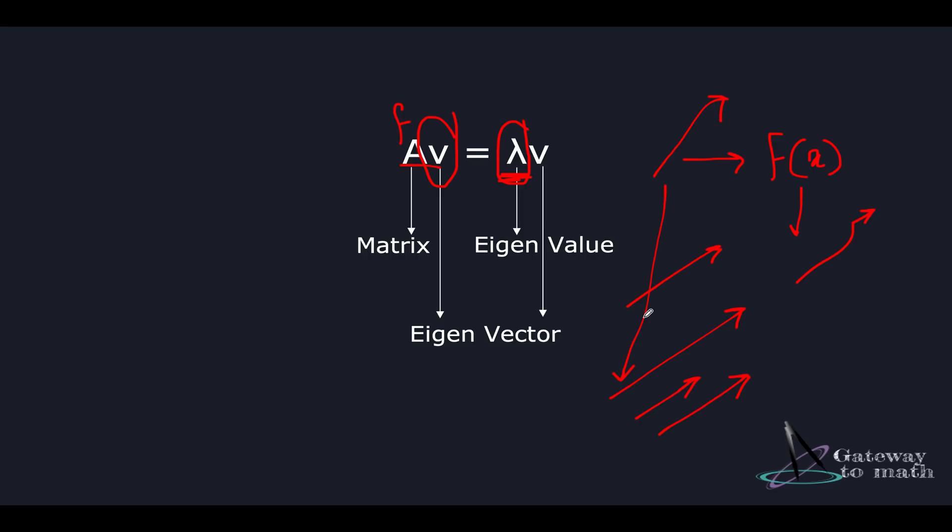But the direction is still the same. So this is the mental picture for eigenvectors. This vector is the vector. When you pass it through any function, it will still have the same direction. However, the magnitude will change and the change in magnitude is called as the eigenvalue, represented in the form of lambda. This is all that you need to keep in mind as far as eigenvectors and eigenvalue is concerned.